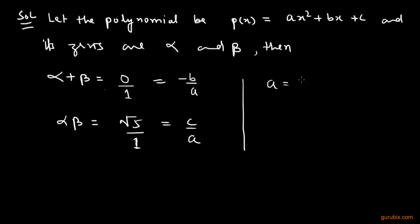So a is equals to 1, b is equals to 0, c is equals to root 5. So the required polynomial is x square, b is 0 which means this term will vanish, and c is equals to root 5.